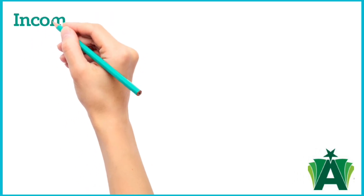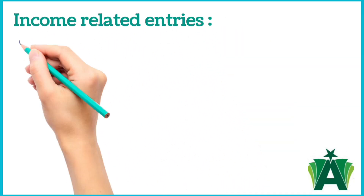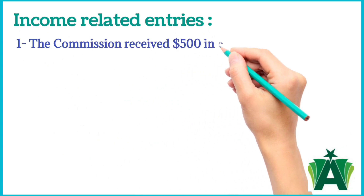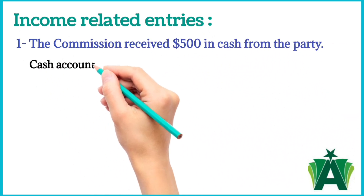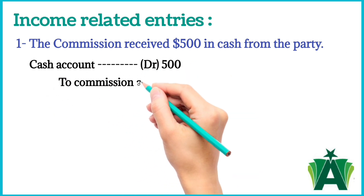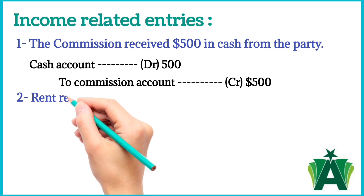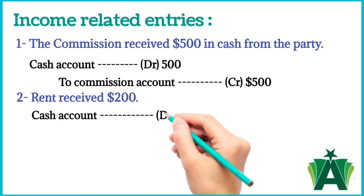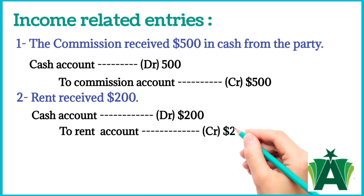Here are some examples of income-related journal entries. Commission received $500 in cash from the party — journal entry: cash account debit $500, to commission account credit $500. Rent received $200 — journal entry: cash account debit $200, to rent account credit $200.